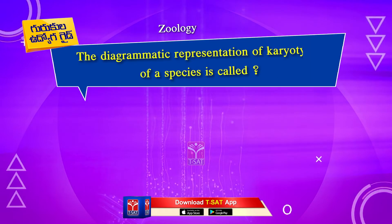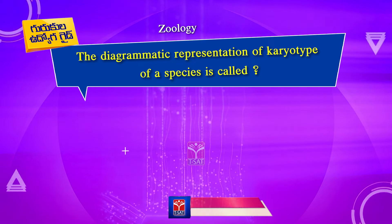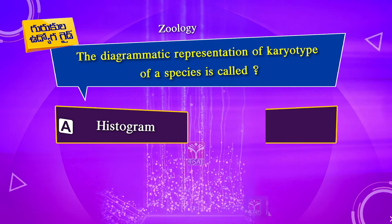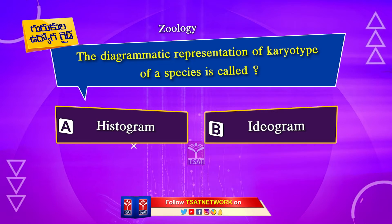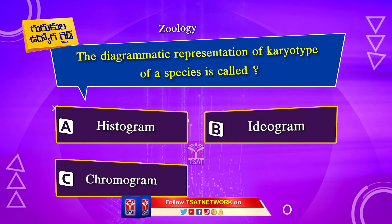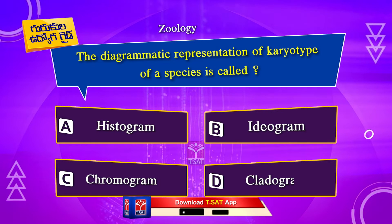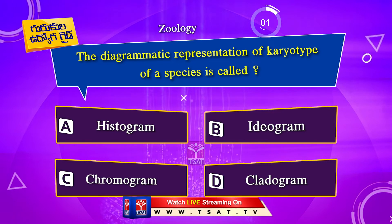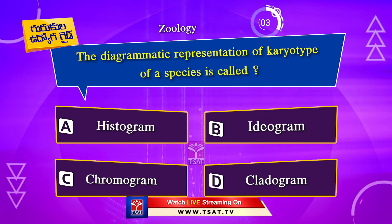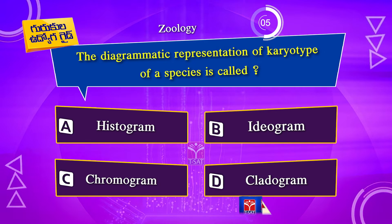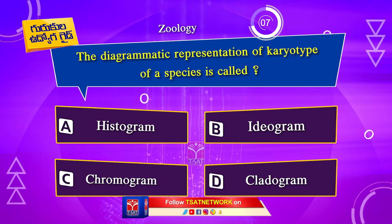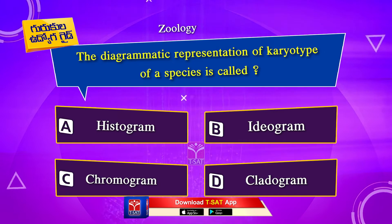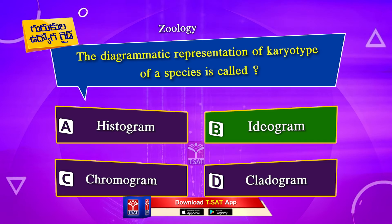Next question. The diagrammatic representation of karyotype of a species is called: Option A. Histogram. Option B. Ideogram. Option C. Chromogram. Option D. Cladogram. The correct answer is Option B. Ideogram.